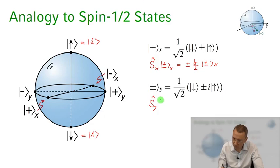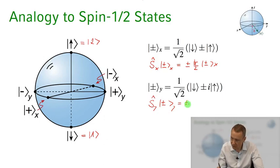If you take sx operator act with it on this plus minus state in the x direction that just gives you plus minus h bar over 2 plus minus x. And for the plus minus y state here that's just the eigen state of the sy operator giving us eigen values plus minus h bar over 2. So these kind of special superposition states that we actually encountered in the x and y direction correspond to the eigen states of the spin one half particle in the x direction and in the y direction.